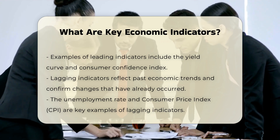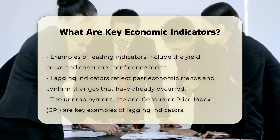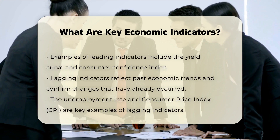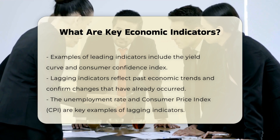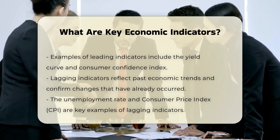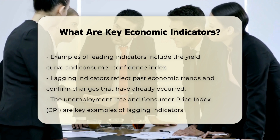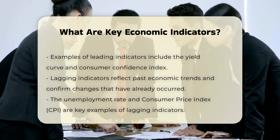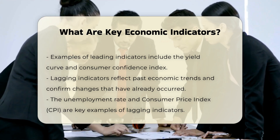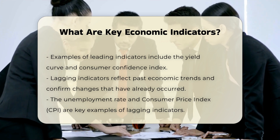Coincident indicators provide nearly real-time data and reflect the current state of the economy. Personal income and non-farm payrolls are examples of coincident indicators. These indicators change more or less simultaneously with economic conditions, making them valuable for policymakers in evaluating the effectiveness of current policies.